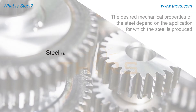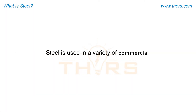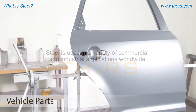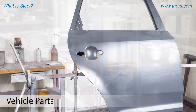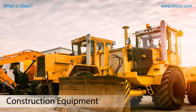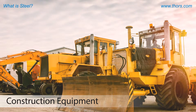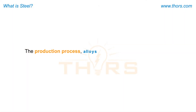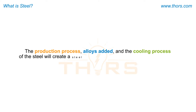Steel is used in a variety of commercial and industrial applications worldwide, including vehicle parts, cookware, and construction equipment. The production process, alloys added, and the cooling process of the steel will create a steel with various microstructures and properties.